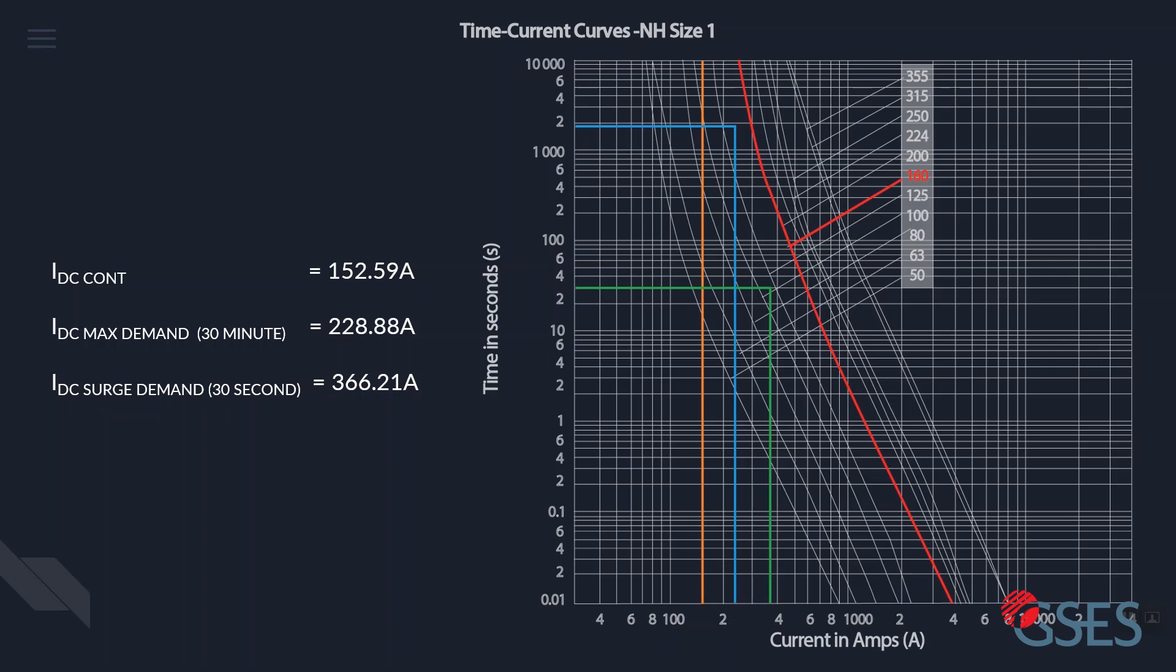Note that the rating of the selected fuse must be higher than the continuous current. Otherwise, it will eventually blow on slow overload, even if the curve on the chart appears to allow its use. You may use a fuse greater than 160 amps, as long as the cables are sized to carry the larger current.